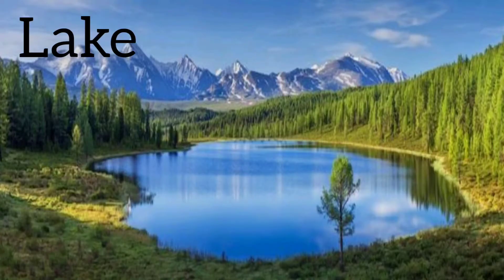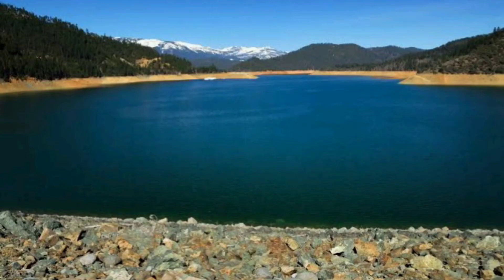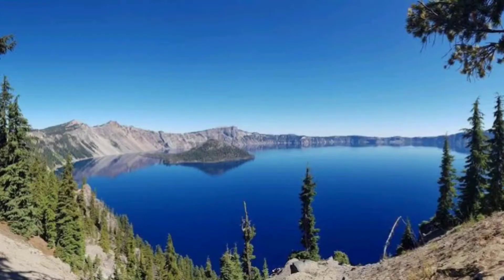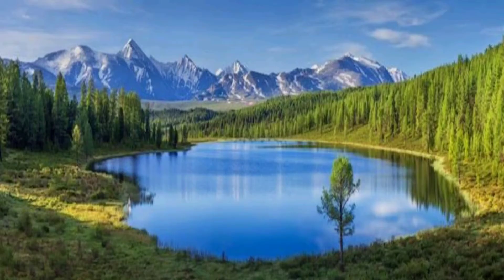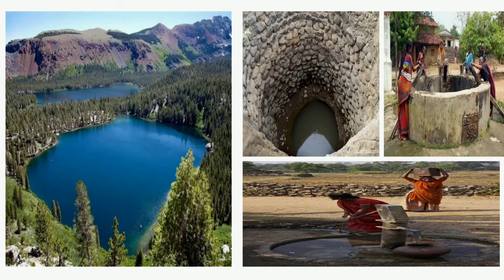A lake is an area filled with water and surrounded by land. When water naturally accumulates in certain areas of land, that is called a lake or pond. Many lakes, wells, and bore wells get water from underground springs.